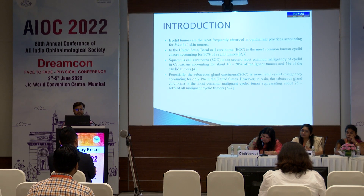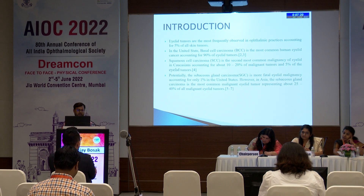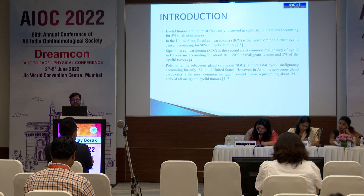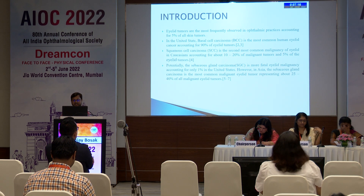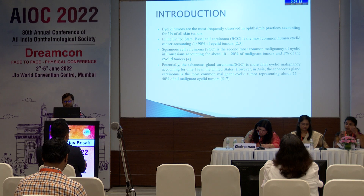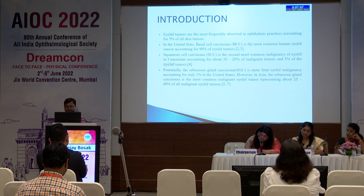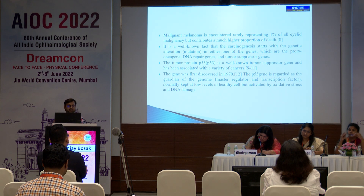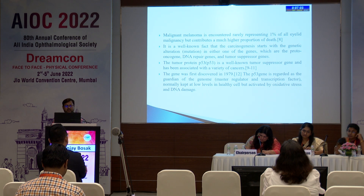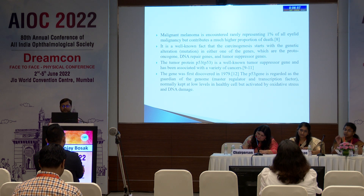Sebaceous gland carcinoma is a more fatal eyelid malignancy, accounting for only 1% in the United States. However, in Asia, sebaceous gland carcinoma is the most common malignant tumour, representing about 25-40% of all malignant eyelid tumours. Malignant melanoma is encountered rarely, representing 1% of all malignancy, but contributes a higher proportion of deaths.